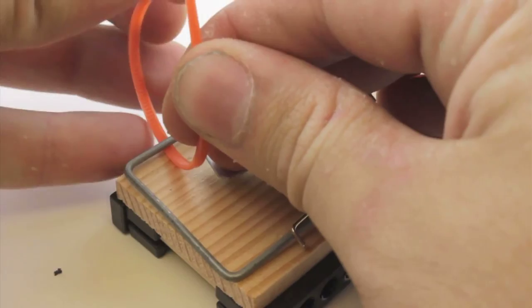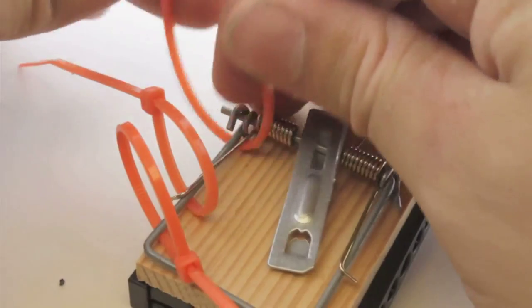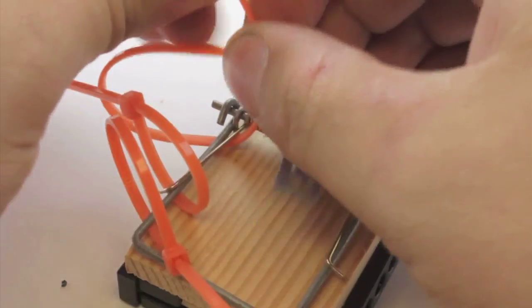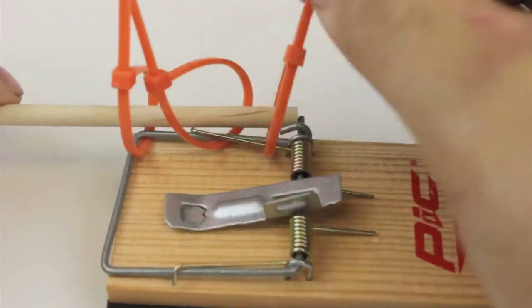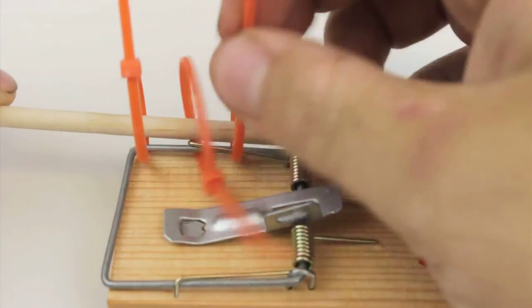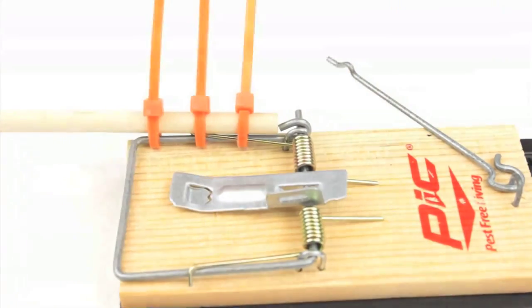Take your cable ties and attach them to the mousetrap lever arm. Slide the dowel into the cable ties and tighten them down. Make sure that your cable ties are tight so that the dowel does not come off.